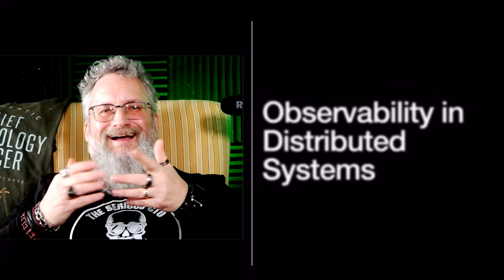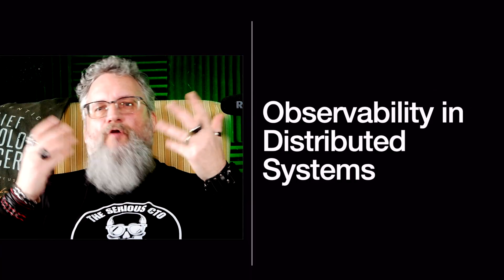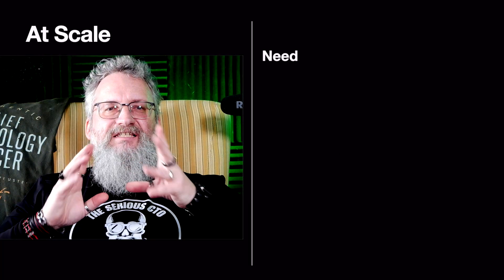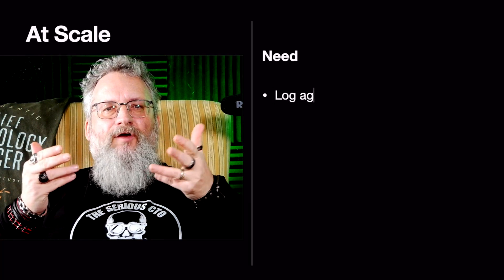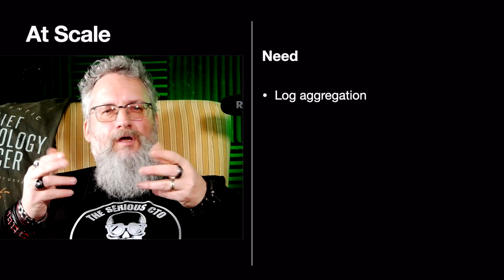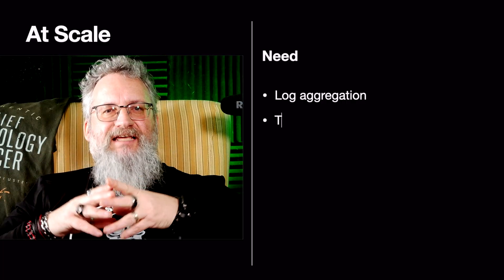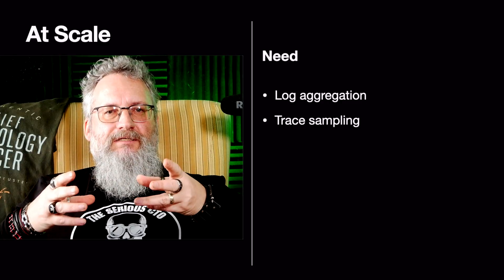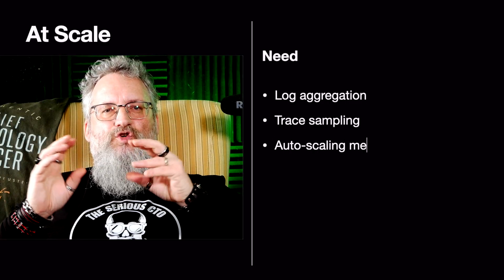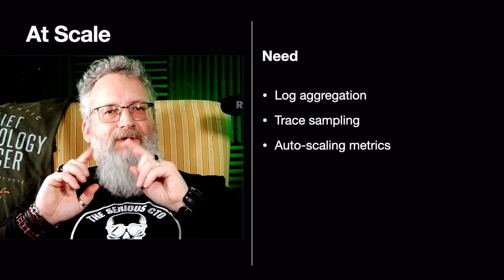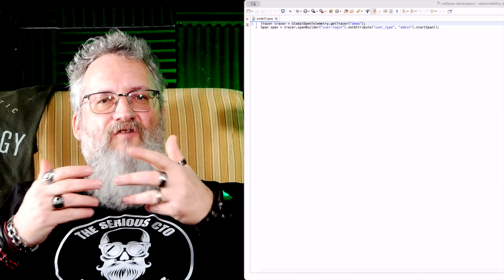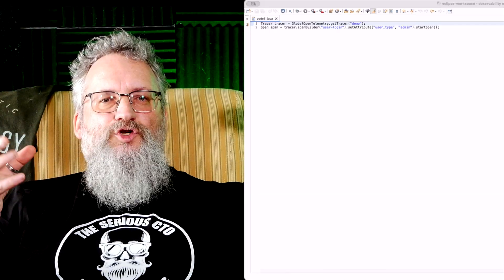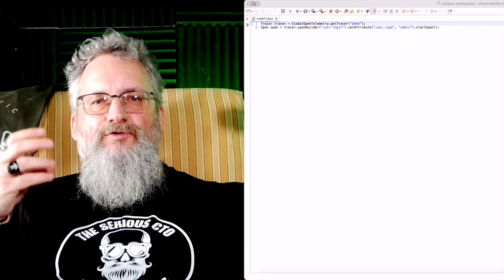There's one more problem: observability at scale. Everything we did works until your system has a hundred-plus services. At scale, you need log aggregation — ELK, Loki, or Fluentd — trace sampling to only trace slow or failing requests, and auto-scaling metrics to track service health dynamically. For example, drop low-value traces and filter traces by important users or actions.